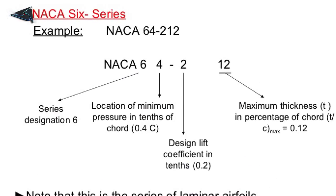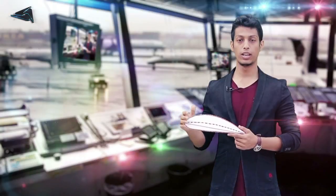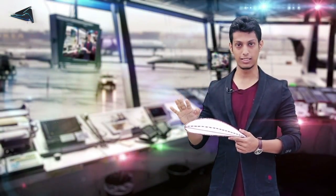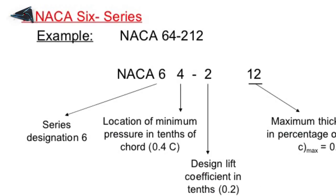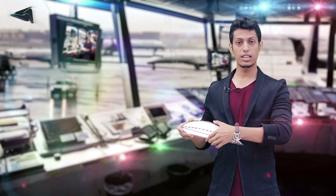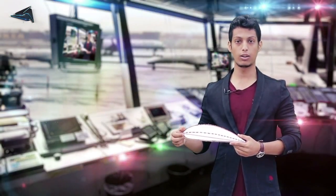For the 6-digit NACA airfoil — for example, NACA 642112 — the six digits represent different parameters. The 6-series airfoil is a distinct category. In the 6-digit airfoil, the first digit (6) identifies the series. The key parameter in 6-series airfoils is the maximum pressure location — given as a percentage of chord by the second digit.